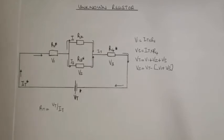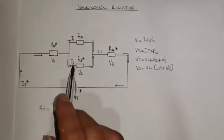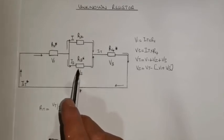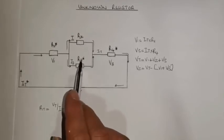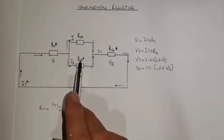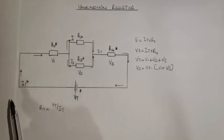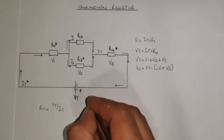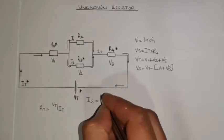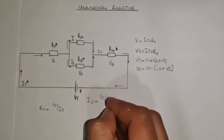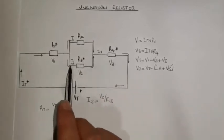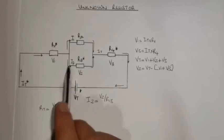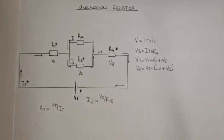The next thing I can calculate is the current I2. I have V2, which is now a known value, and I have R3, which was already a known value given at the beginning. Remember, you only need two of these to calculate the third one. So I can say that I2 is equal to the voltage V2 divided by the resistance R3. Now I have the value of I2.